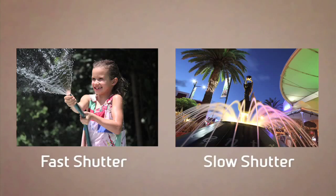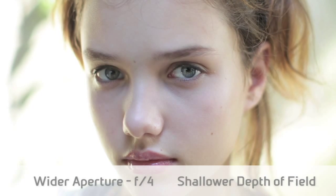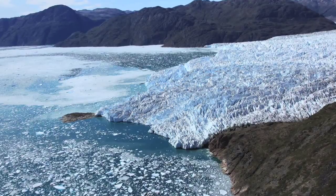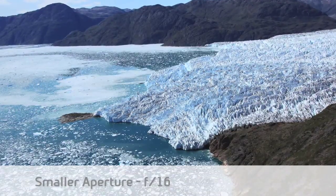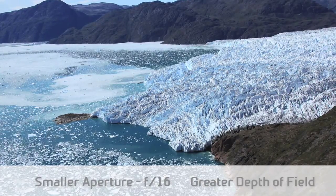In both cases, the same amount of light falls on the sensor, but the aperture-shutter speed combination is different and delivers different creative outcomes. In photography, we always need to consider the creative implications of our choices. A wide aperture of F4 will give us a very shallow depth of field, with less in focus in front and behind our subject, while a smaller aperture of F16 will give a greater depth of field, meaning much more will be in focus in our picture.